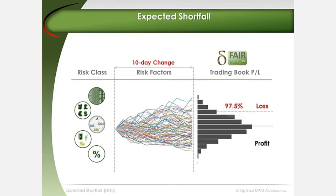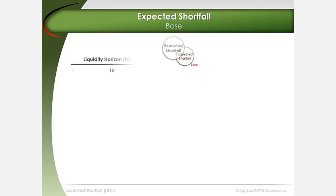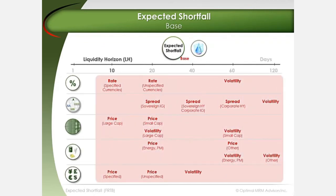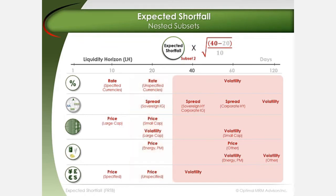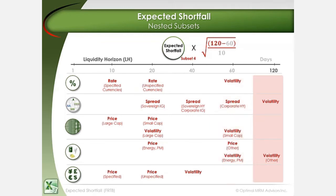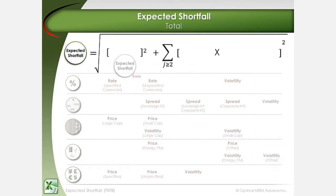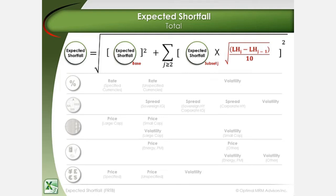The simulated loss at a 97.5% confidence level is referred to as the base expected shortfall and is a function of changes in all risk factors. In order to capture the effects of reduced liquidity during market stress, the simulation is repeated for all traded positions. For each subset, the corresponding simulation's expected shortfall is scaled marginally higher by the associated liquidity horizon. The total expected shortfall is then equal to the square root of the squares of the base expected shortfall and the sum of expected shortfall for the subsets of the risk factors whose liquidity horizon is longer than 10 days.